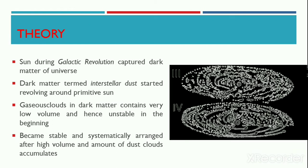According to the Interstellar Dust Hypothesis, the Sun during its galactic revolution captured the dark matters of the universe. These gravitationally attracted dark matters started revolving around the primitive Sun. Such dark matters are termed interstellar dust by Schmidt.